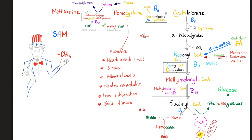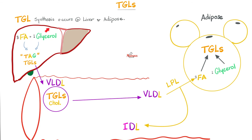Choline becomes betaine, betaine gives a methyl group to homocysteine so homocysteine becomes methionine. Methionine can then give its methyl group — acquired from betaine or from methyl-tetrahydrofolate — to SAM (S-adenosylmethionine), and SAM becomes the methyl group donor. When the liver wants to get rid of fat, it loads it onto lipoproteins — choline aids this process (lipotropic). That's why choline deficiency leads to fatty liver disease.